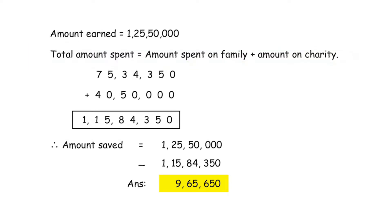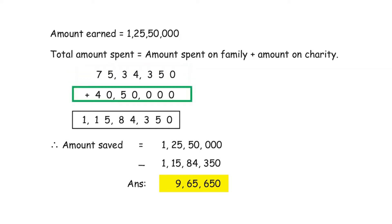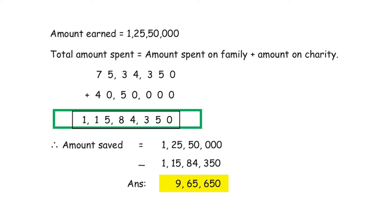Let's write down the amount spent on family: 75,34,350 rupees plus 40,50,000 rupees. Remember to write all the digits in the correct place value. Now let's do a simple addition, starting from the right — ones place — and going all the way to the left. The result is 1 crore 15,84,350 rupees. That is the total amount spent.